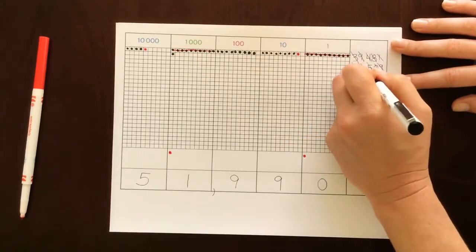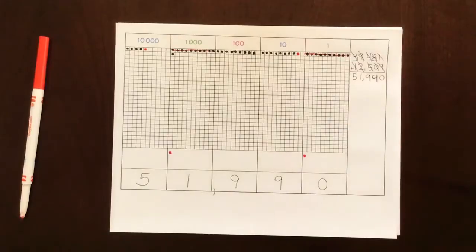And that is how to do the dot game for dynamic addition into the ten thousands.